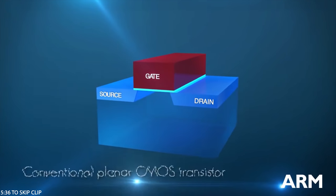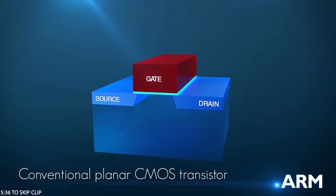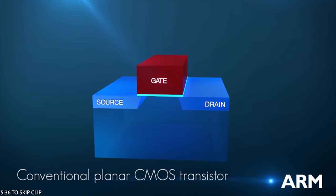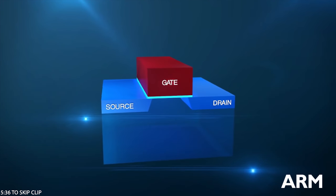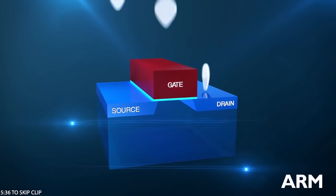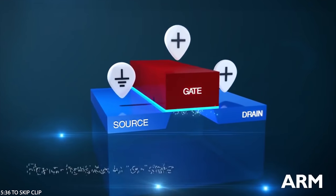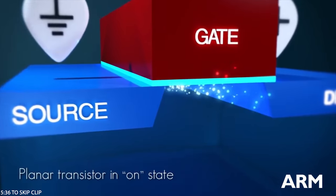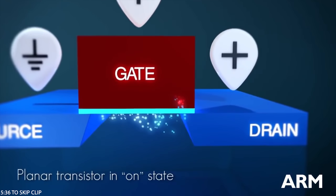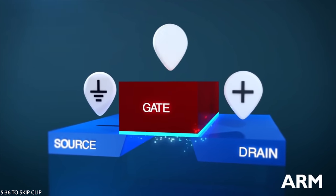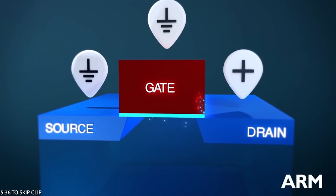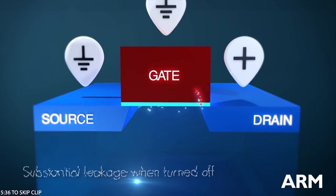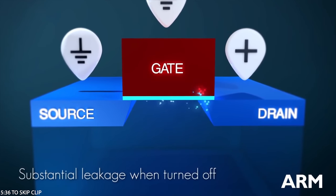Here is a conventional planar CMOS transistor. On top of a silicon substrate are two electrical terminals, the source and the drain, separated by an electrically controlled gate. When voltage is applied to the gate, a conductive channel is formed and electrons flow from the source to the drain. When voltage is removed, the current should completely cease. However, in modern transistors, substantial leakage flows even when the gate is turned off.